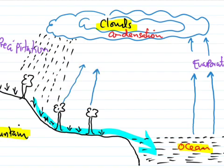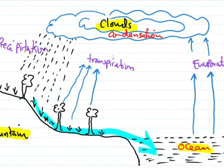Water from plants goes back into the atmosphere. This process is called transpiration. Transpiration helps in increasing the concentration of water vapor in the atmosphere.